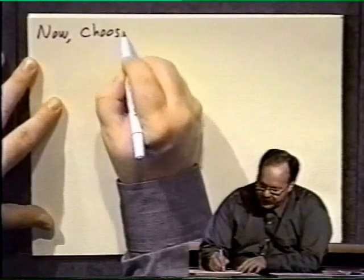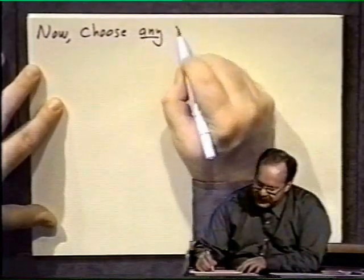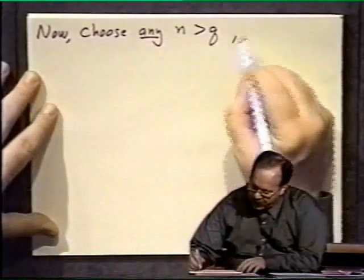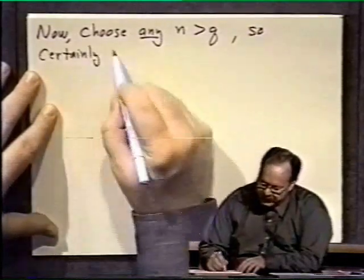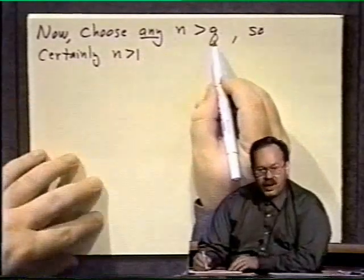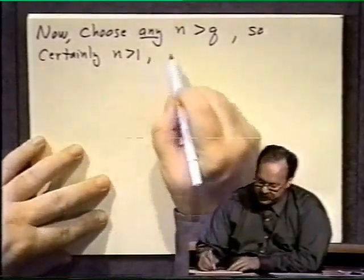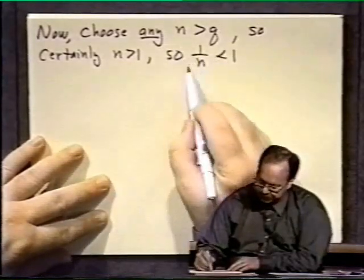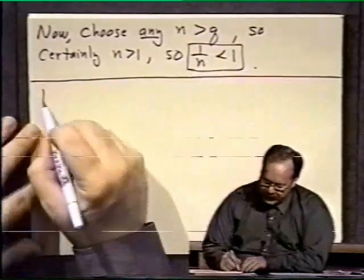Now, first of all, let's choose our n that we're going to be using here. You'll see where the n comes in. We'll choose any n whatsoever that's bigger than the denominator of p over q. So, certainly, no matter what we choose for that to be, certainly n is greater than 1. Q could be 1 or bigger, but it's not going to be less than 1. So certainly, n is greater than 1. So, if we flip both sides over, that means 1 over n will be less than 1. Now, that's a small observation.